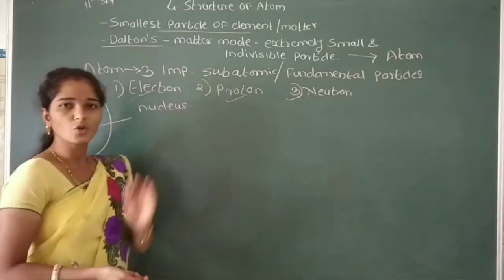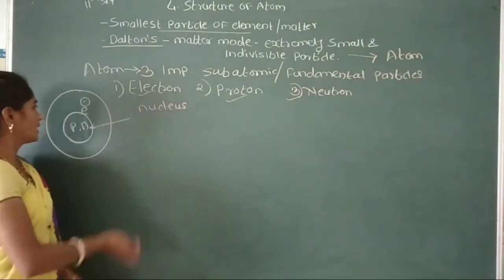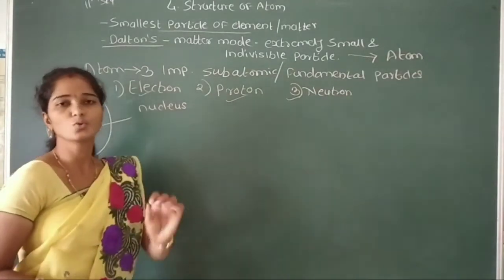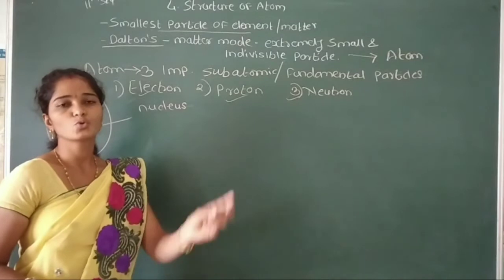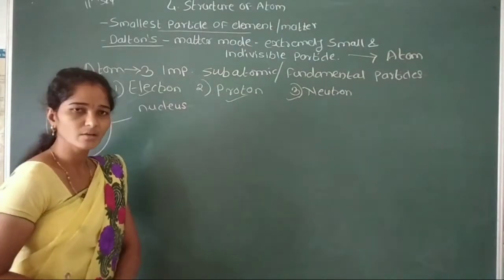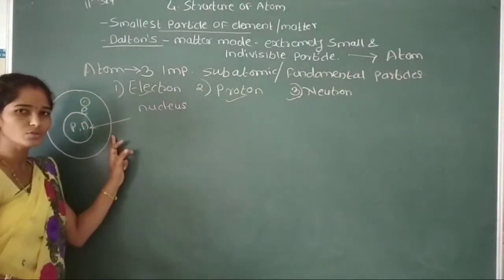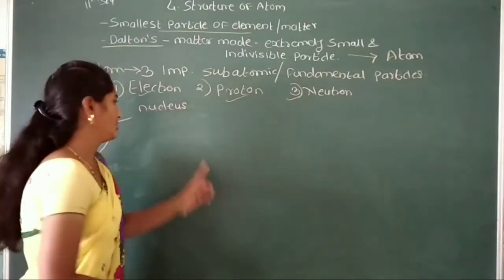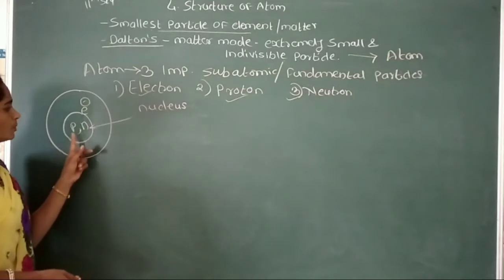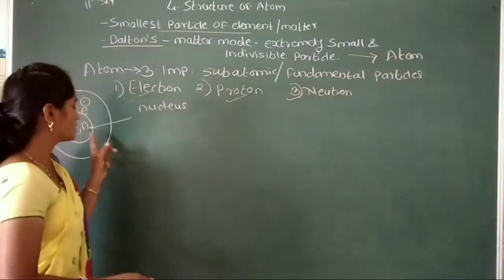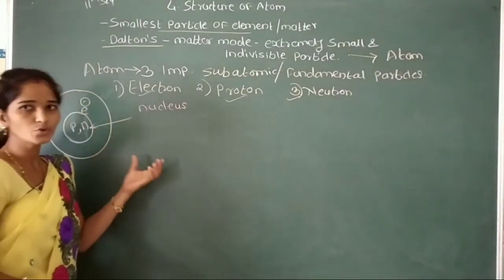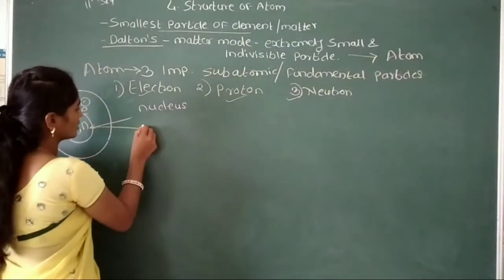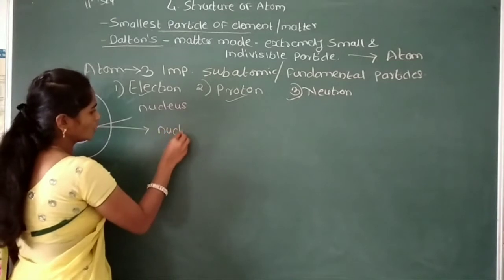This is the actual structure of atom. In the atom, at the center there is an empty space called the nucleus. In this nucleus, 2 sub-atomic particles are present: protons and neutrons. The electron surrounds the nucleus. Protons and neutrons present in the nucleus are collectively called nucleons.